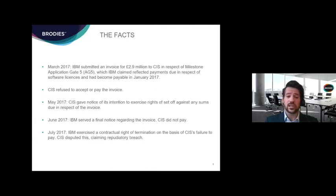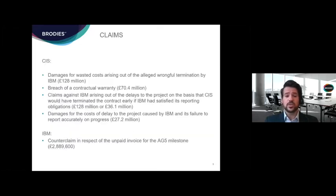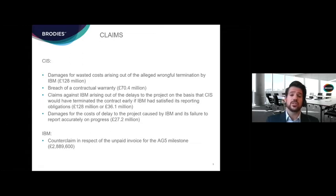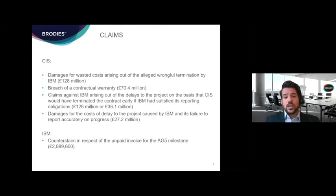CIS disputed the termination and claimed there had in fact been a repudiatory breach, which led to the dispute and various claims being raised by CIS. Those included primarily a claim for damages for wasted costs arising out of the alleged wrongful termination, a breach of contractual warranty claim, and other claims in relation to alleged failures in reporting. IBM counter-claimed and sought payment of their invoice for the AG5 milestone.